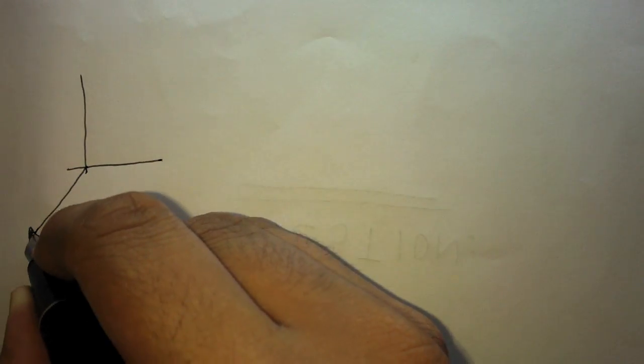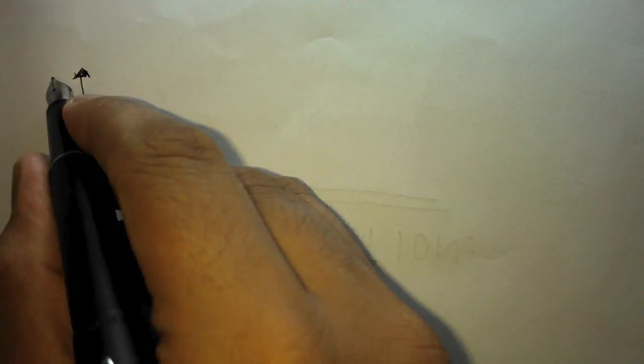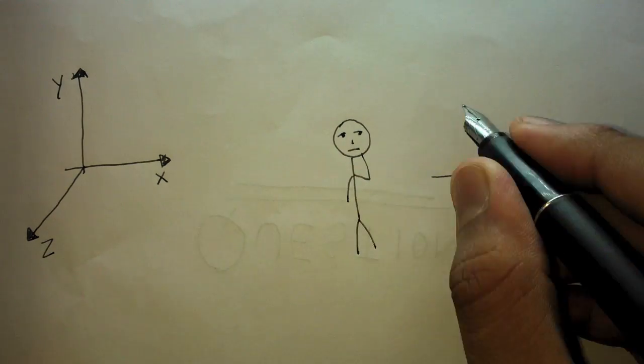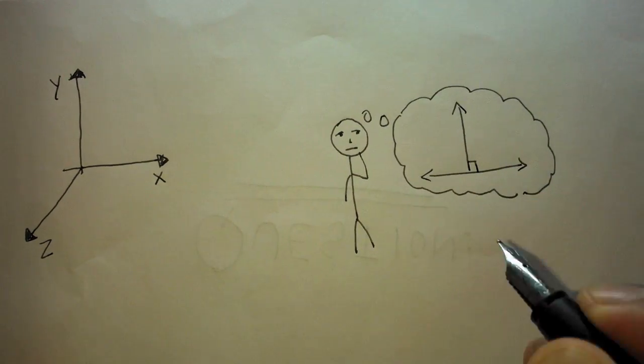We represent three dimensions with the help of three axes, the x-axis, the y-axis and the z-axis. When I learned geometry, it was fixed in my mind that dimensions should always be perpendicular to each other.